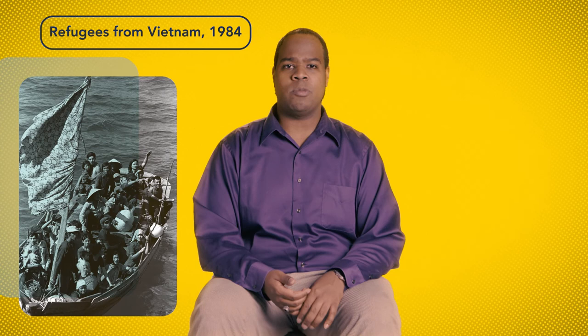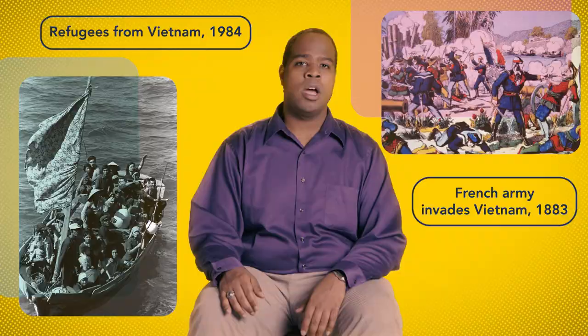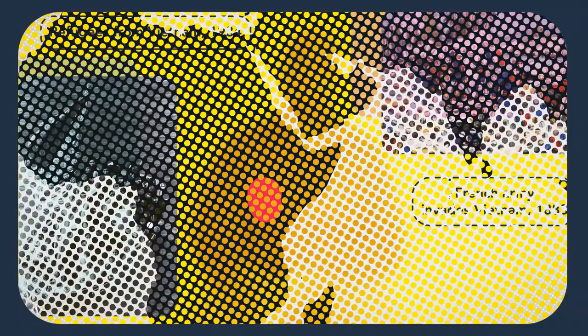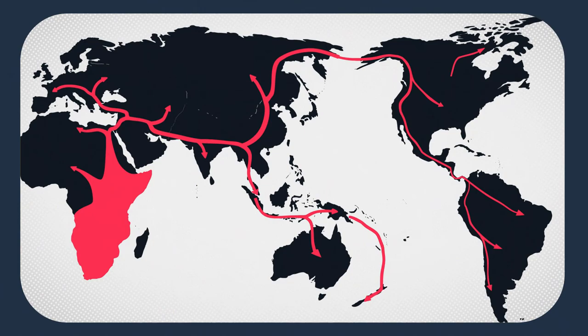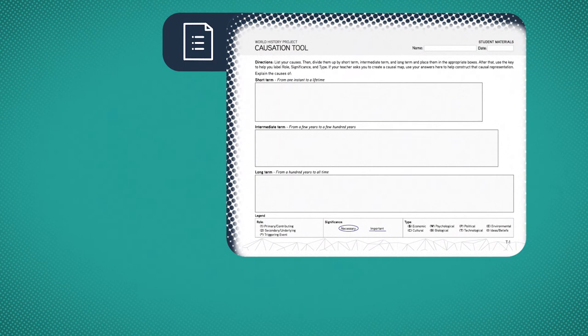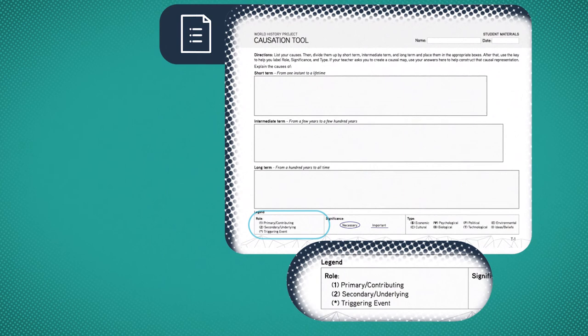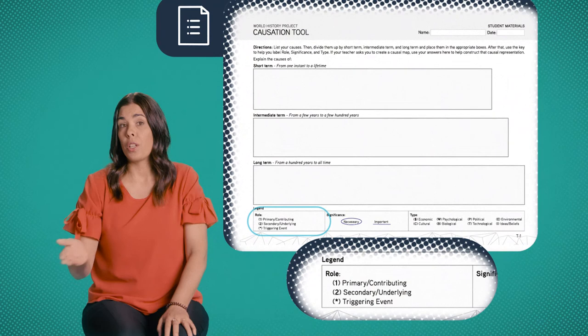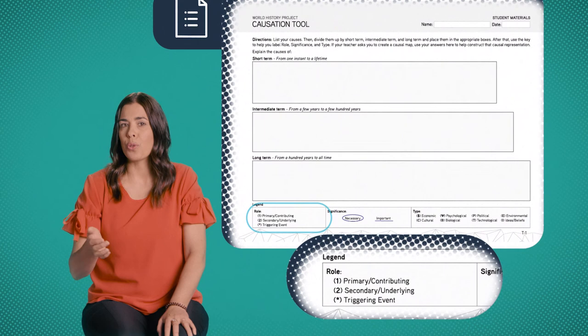For example, if you look at global migration within a 100-year period, something that happened 50 years before that event could easily be considered a long-term cause — war, disease, pollution, you name it. However, if you zoom out on humans migrating across the earth and frame it within a thousand-year time period, suddenly that 50-year thing is a short-term cause. That idea still blows my mind sometimes, and it definitely blows my students' minds. After dealing with causes at different scales of time, they dig into what we call role — in other words, what part did the cause play in this whole causation drama?